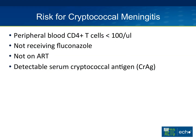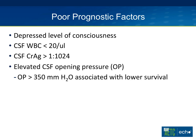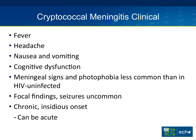Risk factors include CD4 below 100, not being on fluconazole, not being on antiretroviral therapy, and detectable serum cryptococcal antigen — not everyone with a reactive serum cryptococcal antigen has meningitis, but it identifies who needs a lumbar puncture. Poor prognostic factors include depressed level of consciousness, low CSF white cells (cutoff of 20 in older literature; 5 in newer studies), cryptococcal antigen above 1:1024, and elevated CSF opening pressure. An opening pressure above 350 mm has been associated with lower survival. Clinical features include fever, headache, nausea, vomiting, and cognitive dysfunction — meningeal signs and focal findings are less common than in HIV-negative patients.